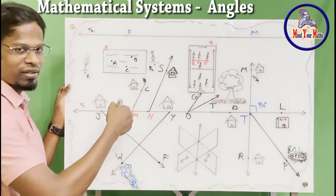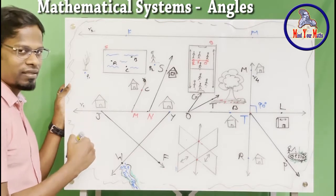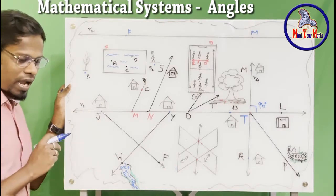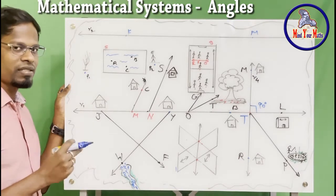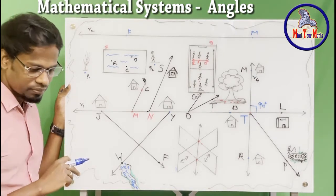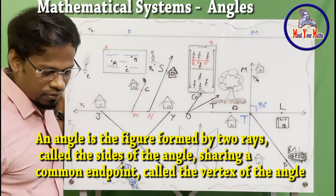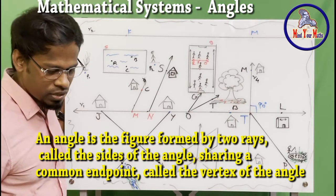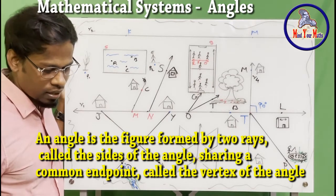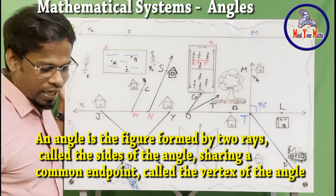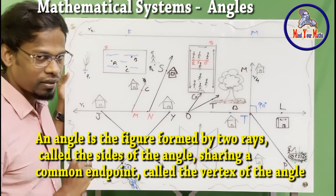Anyway, let's come back to the subject. We are going to study about angles. So in angles, what is an angle? I'll just read the definition for you. It is a figure formed by two rays called the sides of the angle, sharing a common endpoint called the vertex of the angle.